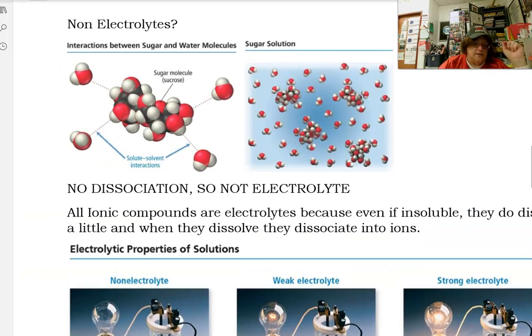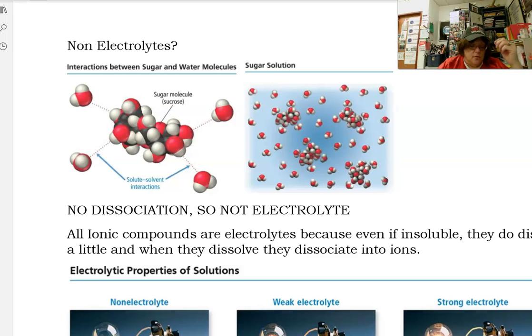Non-electrolytes. We've seen this picture before. Here we have a sucrose molecule, and the water particles come in and surround it. The oxygen's attracted to the hydrogen on the end of the hydroxide groups on the sugar. So the water molecules come in and dissolve it. They're attracted to it, but they don't pull it apart. And in order for an electrolyte to conduct electricity, there have to be ions present.